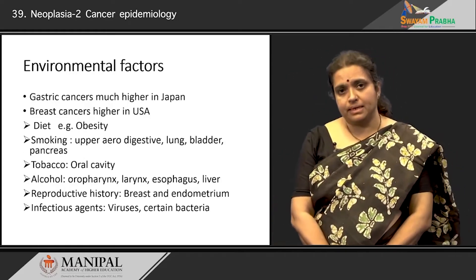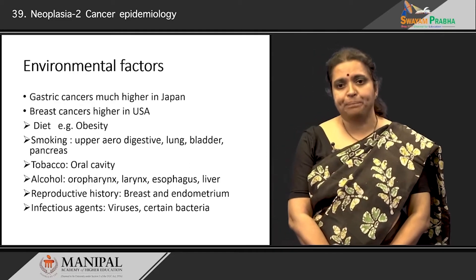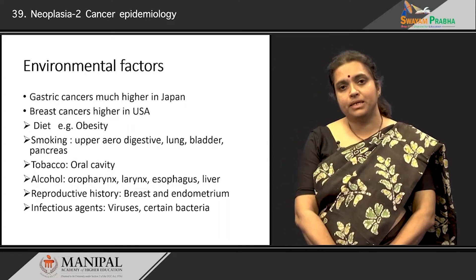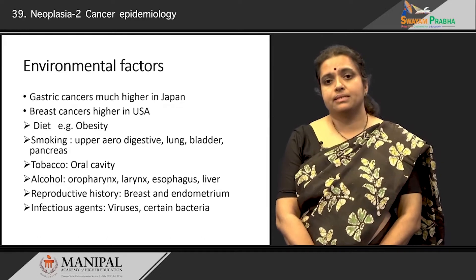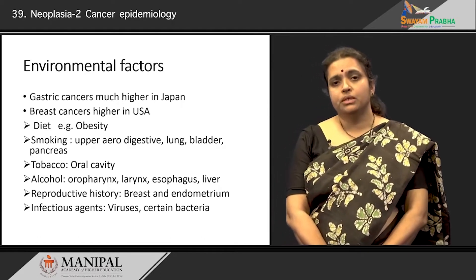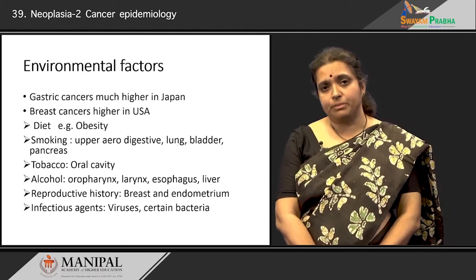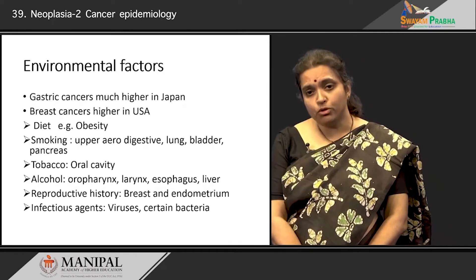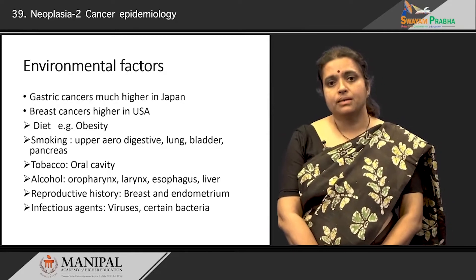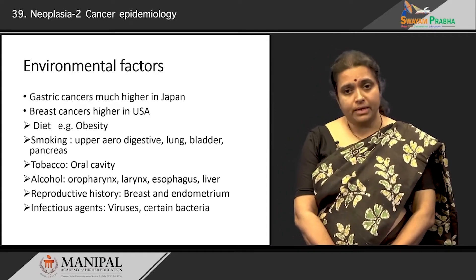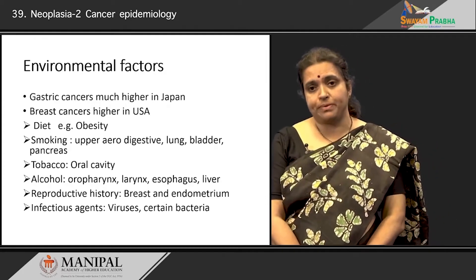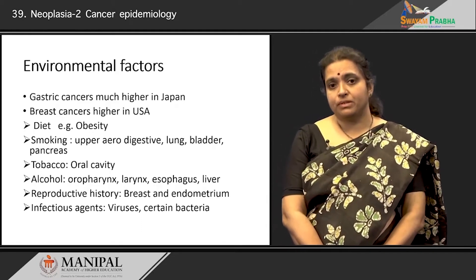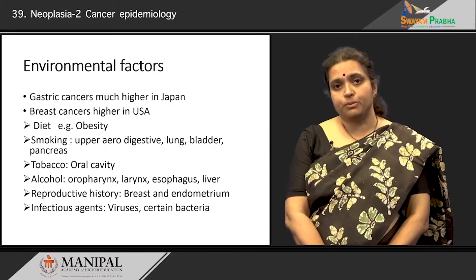What are the environmental factors that affect the development of cancer, and how do they differ across countries? For some reason, gastric cancers are much higher in Japan — this could be due to food habits prevalent in that country, such as high consumption of salted and smoked foods. Breast cancers, on the other hand, are very high in the USA and not so much in Japan. Diet features such as obesity are known to predispose to many cancers.